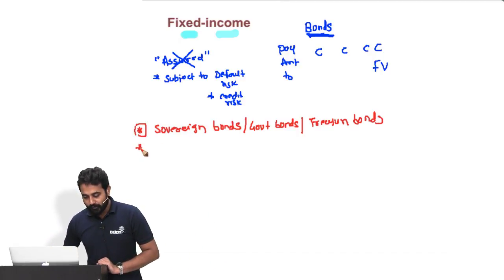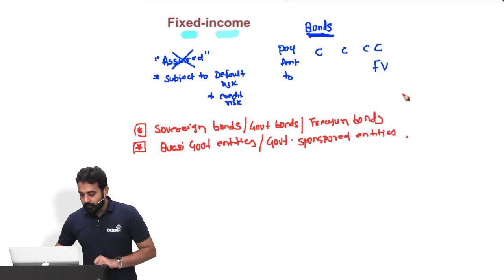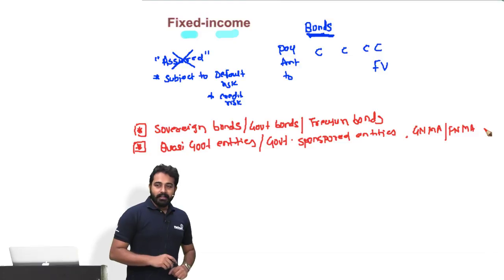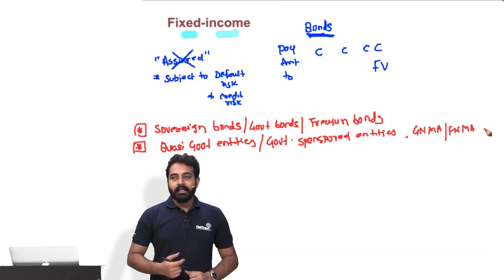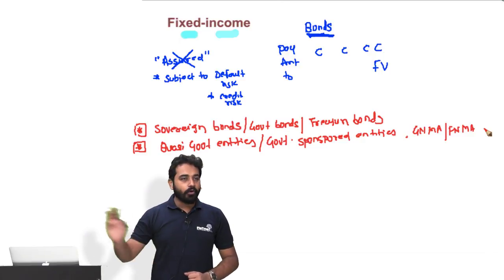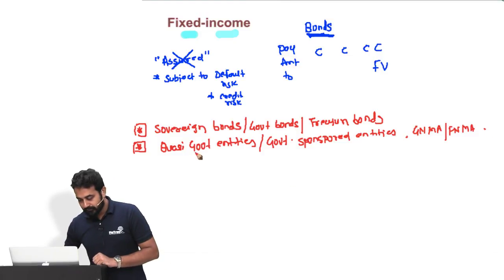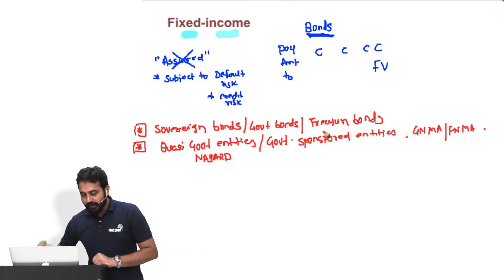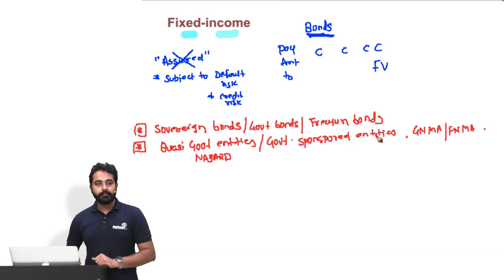Who else are the issuers of bonds? Have you heard of quasi-government entities, also called government-sponsored entities? In the US we have GNMA or FNMA — sponsored by the federal government, which provides some sort of guarantee. In India, the closest example would be NABARD. These quasi-government entities dominate a big chunk of the American bond market.